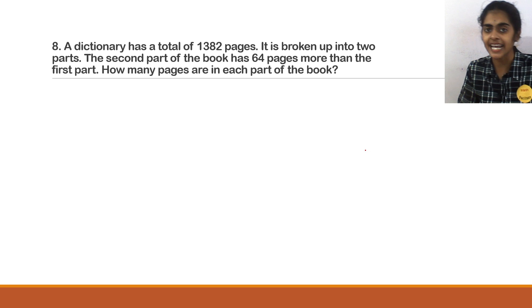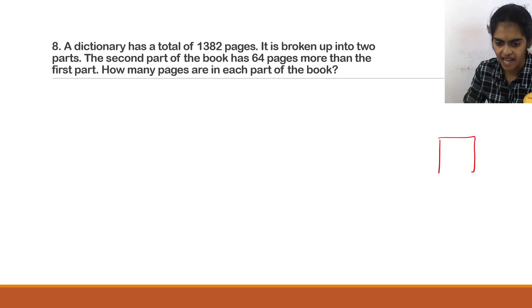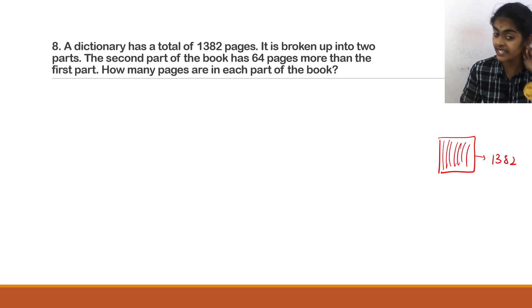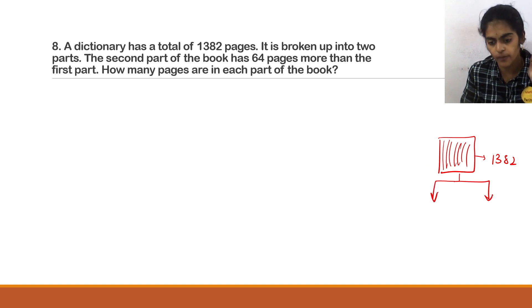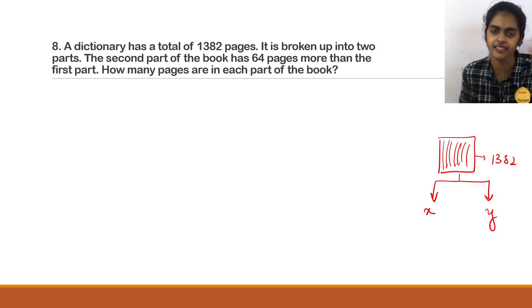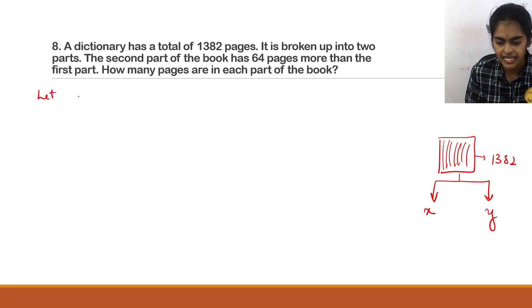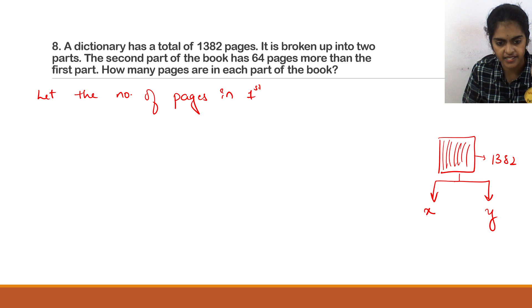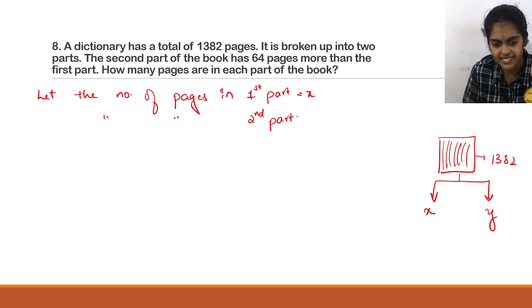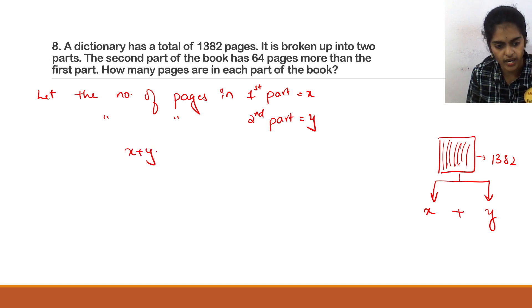Question 8: A dictionary has a total of 1382 pages. The dictionary is broken into two parts. Let the number of pages in the first part be x and in the second part be y. So x + y = 1382. This is equation 1.